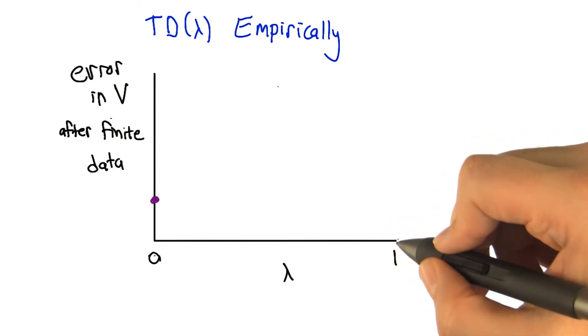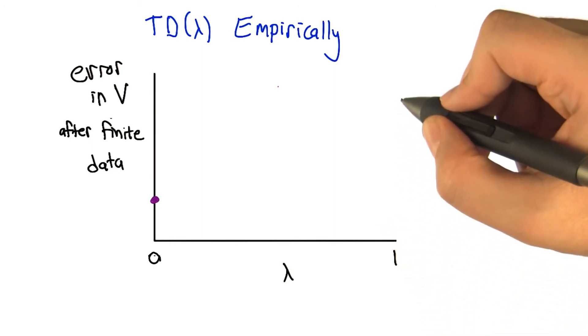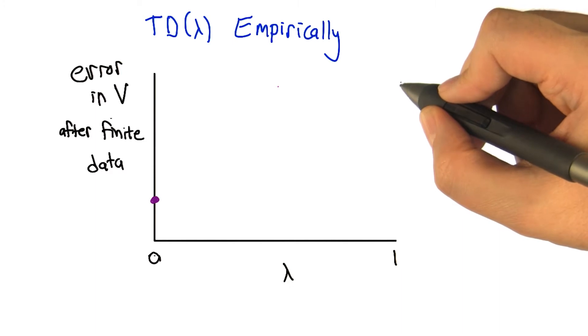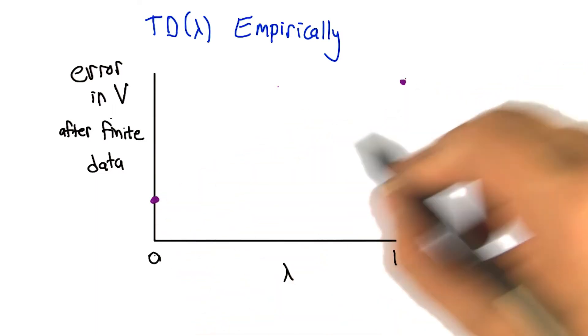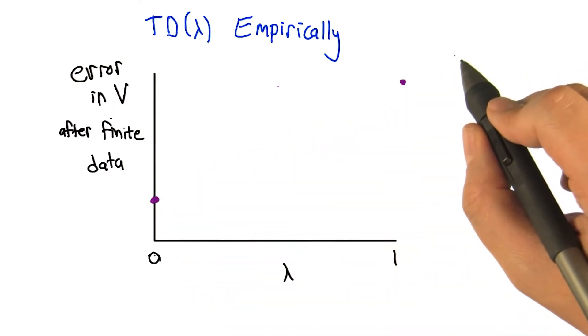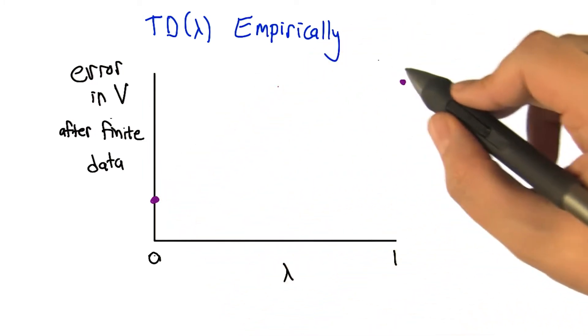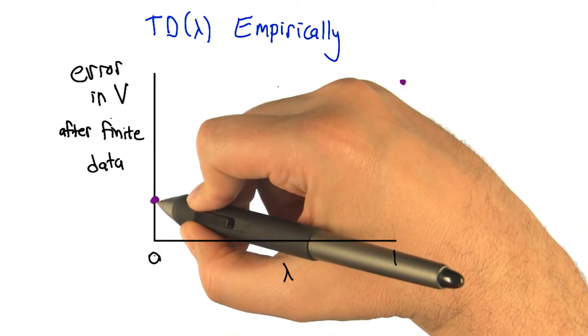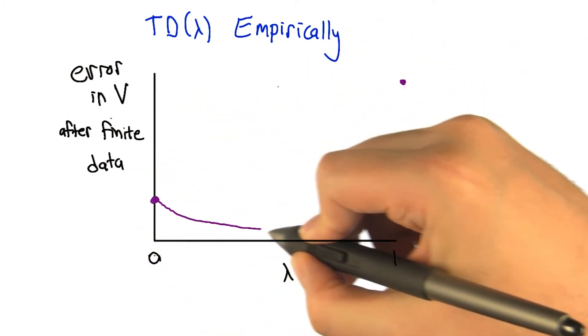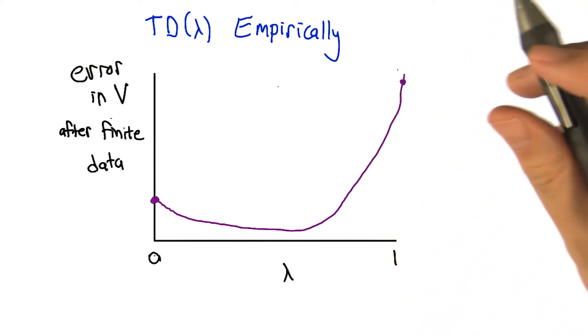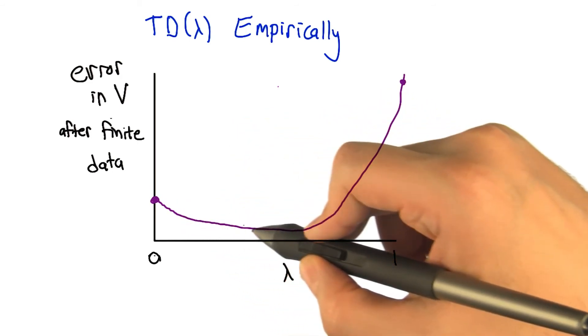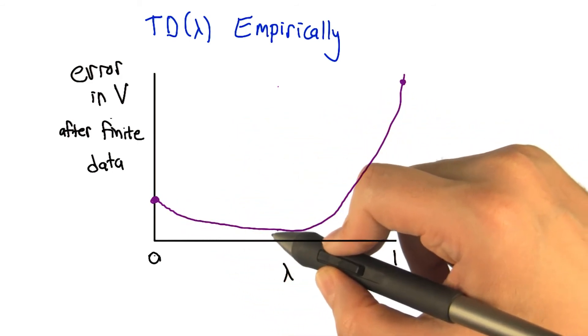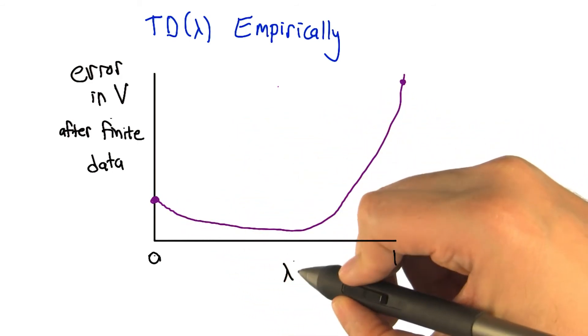Now, it turns out empirically, if you play with this, it's pretty typical for TD one to give you worse error given finite data. And now the important thing is what happens in between. So it could be like a straight line if it was literally interpolating. It could be kind of bowed up, but it's actually typically bowed down. So it's not so atypical to see a curve kind of like this, that gets better. The amount of error goes down as lambda gets to some intermediate value. Let's call it 0.7.